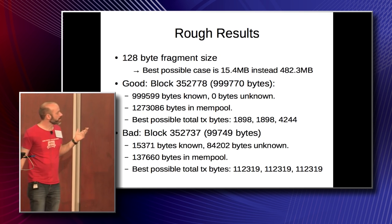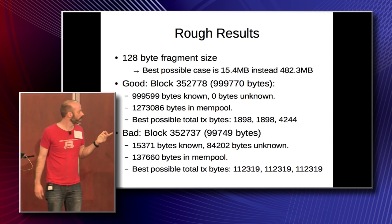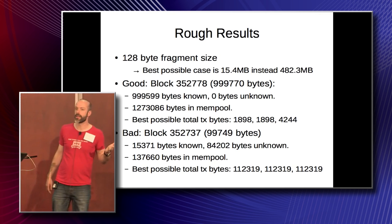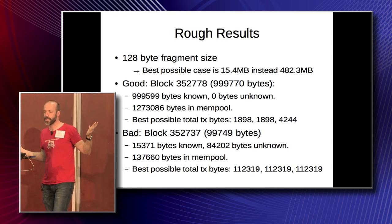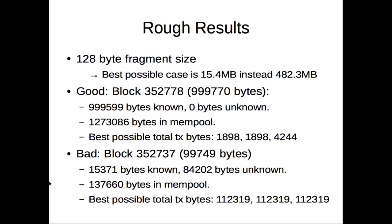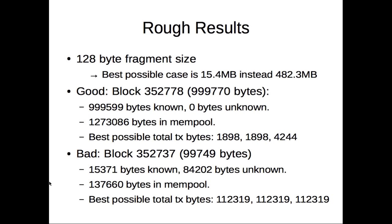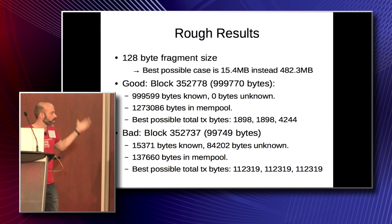Here's a bad case. It's a 100K block, and 84K of that is transactions we've never seen before. We've got only 137K in the mempool, and the best possible case is actually larger than the block itself — which obviously we wouldn't do, but for testing it's interesting. So you can't do much about this: if you haven't seen the transactions before, you've got to send them. In this case you'd probably just send it in the clear.